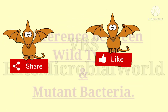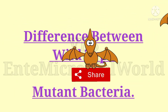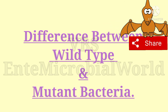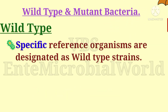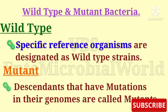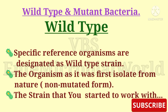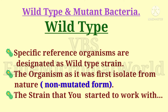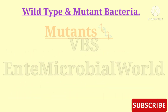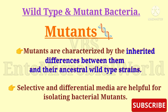Finally, we are going to see the difference between wild type and mutant bacteria. In microbial genetics, specific reference organisms are designated as wild type strains, and descendants that have mutations in their genomes are called mutants. The organism as it was first isolated from nature — that is, the non-mutated form or the strain you started to work with — is the wild type. Mutants are characterized by the inherited differences between them and their ancestral wild type strains.